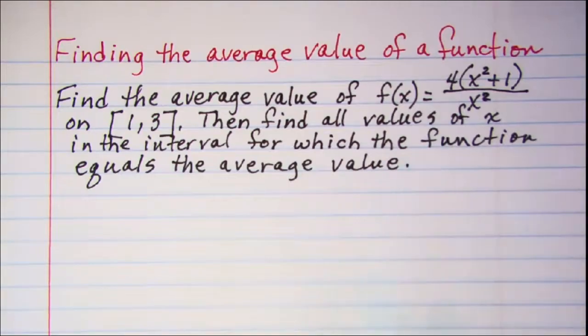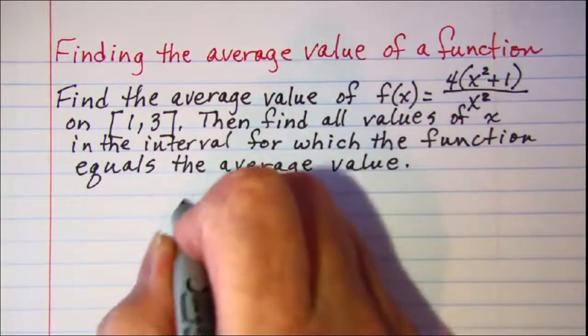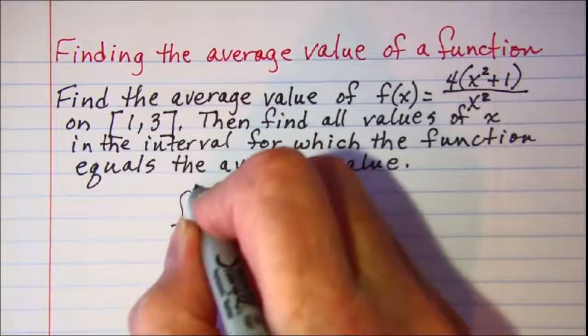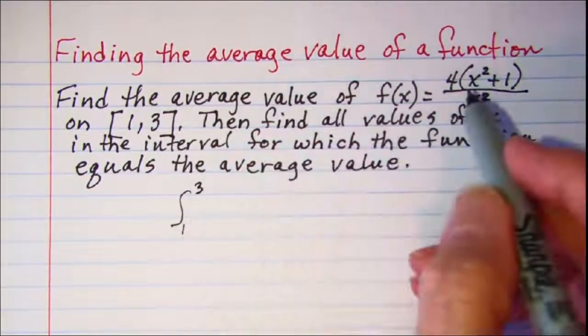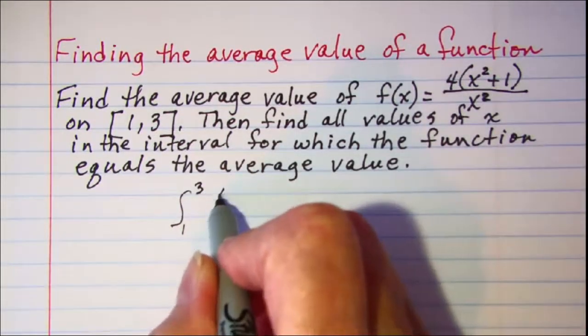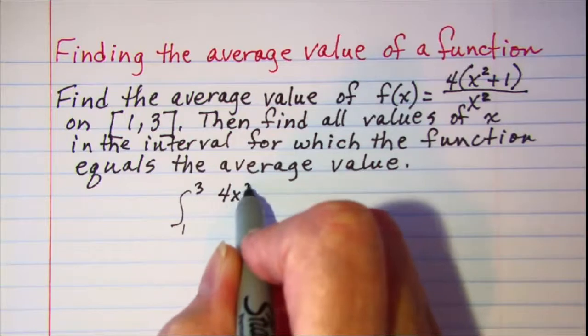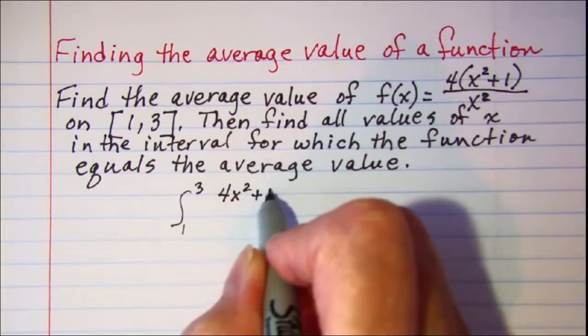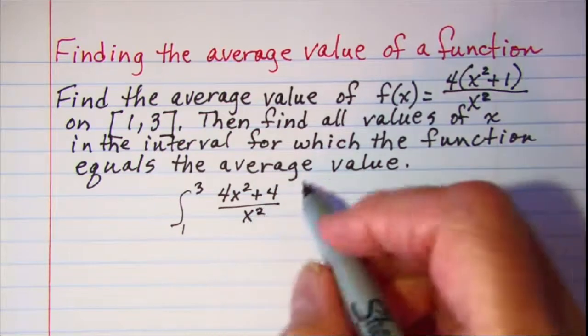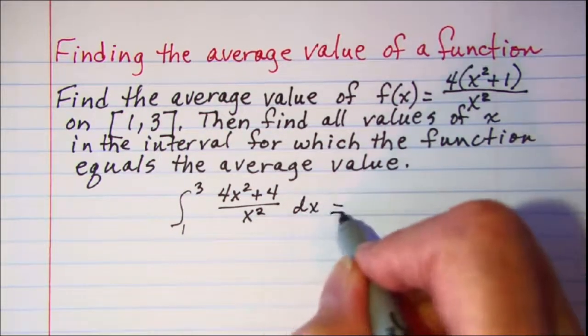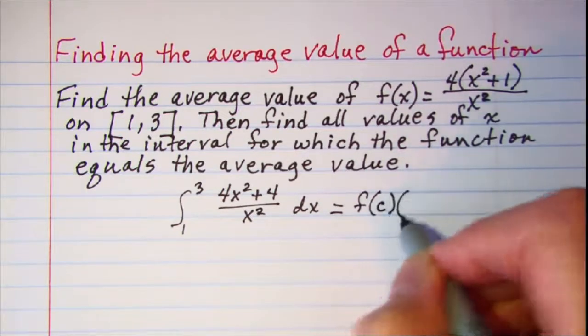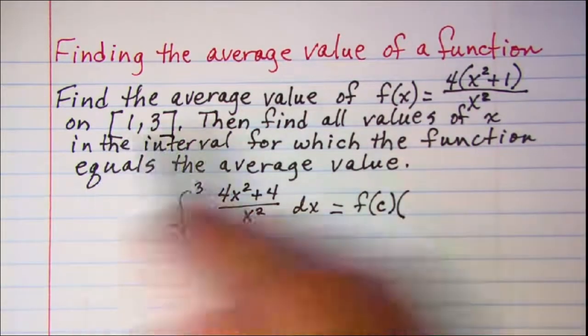Now the mean value theorem states that the integral on this interval from 1 to 3 of our function, and I'm going to go ahead and distribute my 4 through the quantity. So it's 4x squared plus 4 divided by x squared dx is equal to f of c times the difference 3 minus 1.